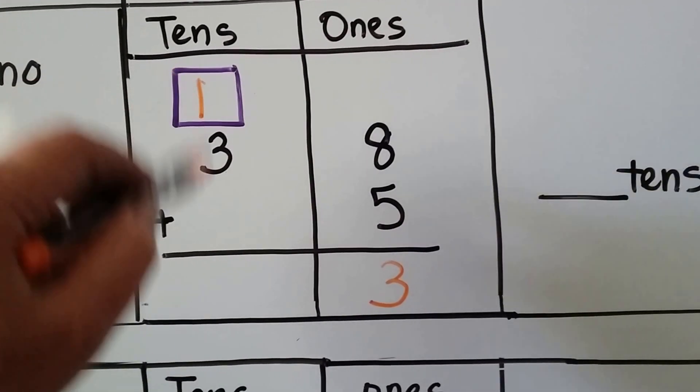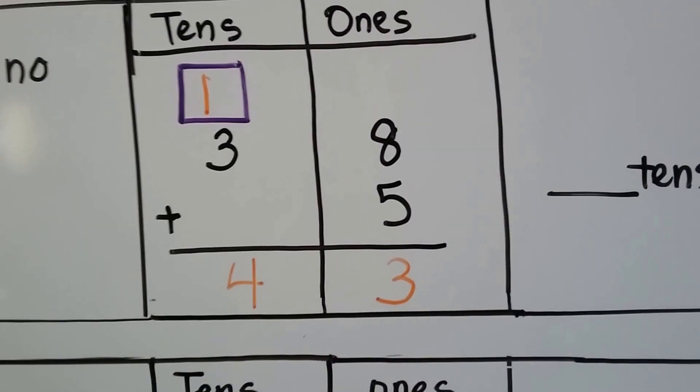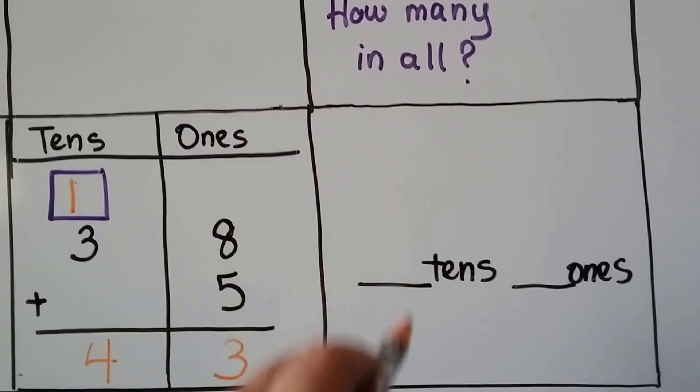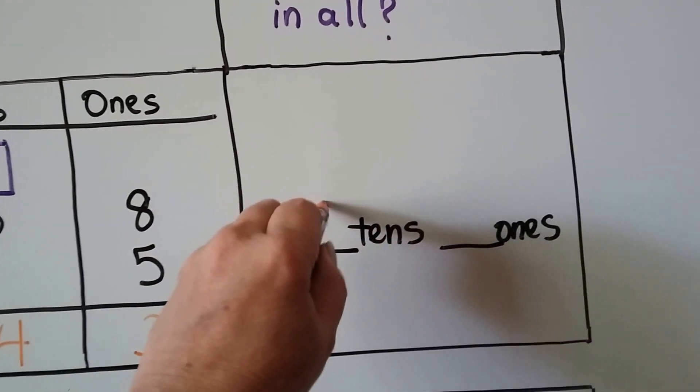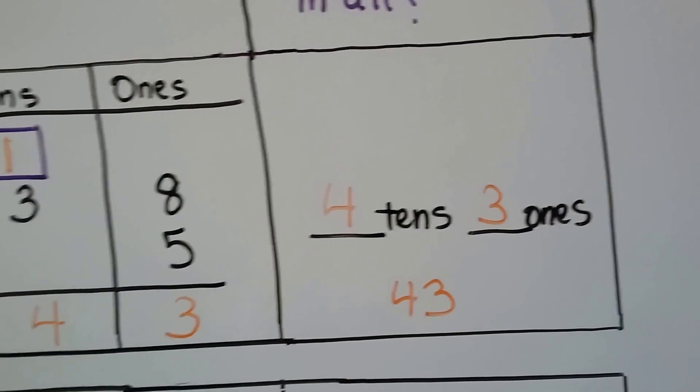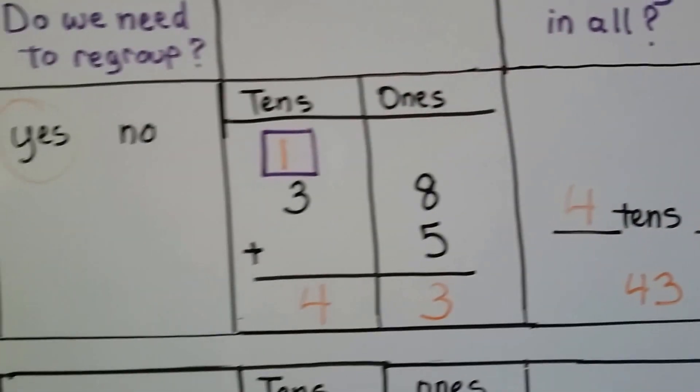Now we add the tens. We have 4 tens and 3 ones. So how many in all? We have 4 tens and 3 ones. That's a 43, isn't it? Alright? Let's try that again.